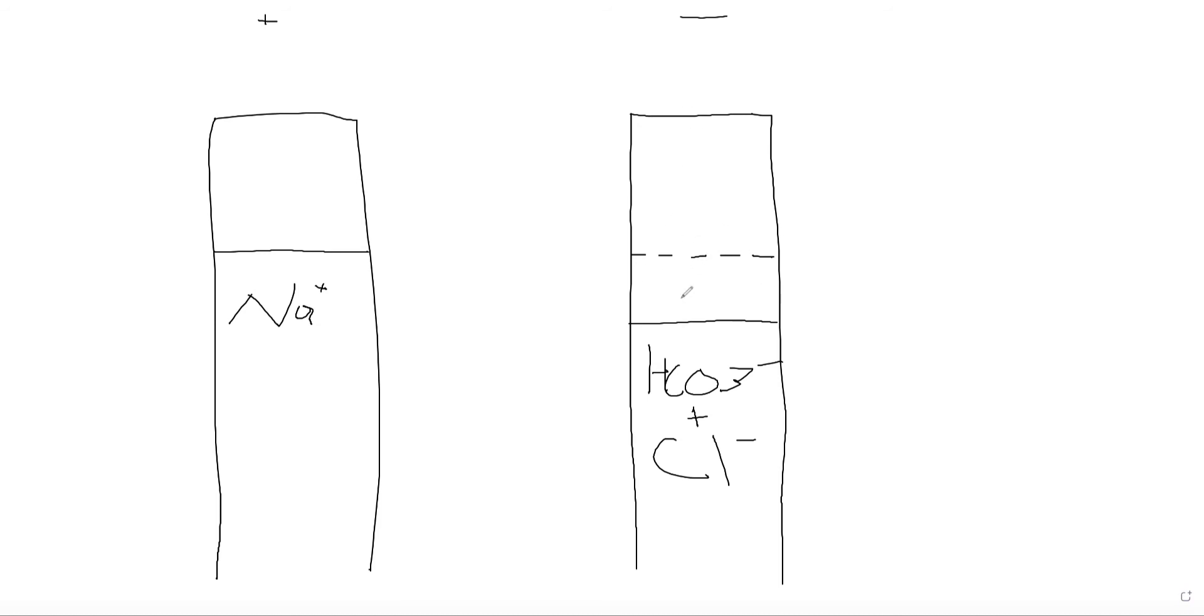The main unmeasured anion is albumin, and up here are all the cations we don't measure. The anion gap is the measured cations minus the measured anions, or it's the unmeasured anions minus the unmeasured cations. Both give the same value.